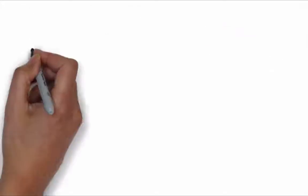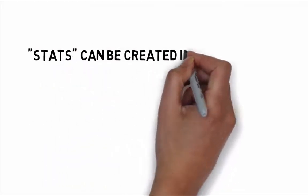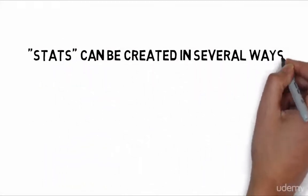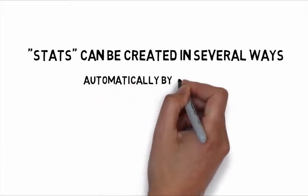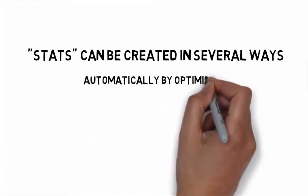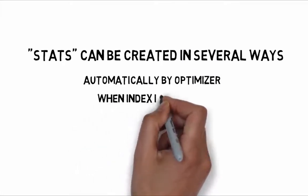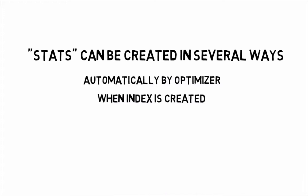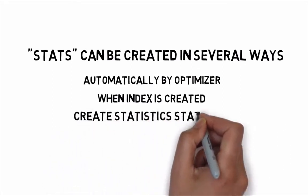Statistics are created in several ways. First, automatically by the query optimizer, if the default option to automatically create statistics — the auto-create statistics flag — is on. Second, when an index is created. Third, when they are explicitly created, for example using the CREATE STATISTICS statement. As an aside, the statistics which are automatically generated by the query optimizer are always single-column statistics.